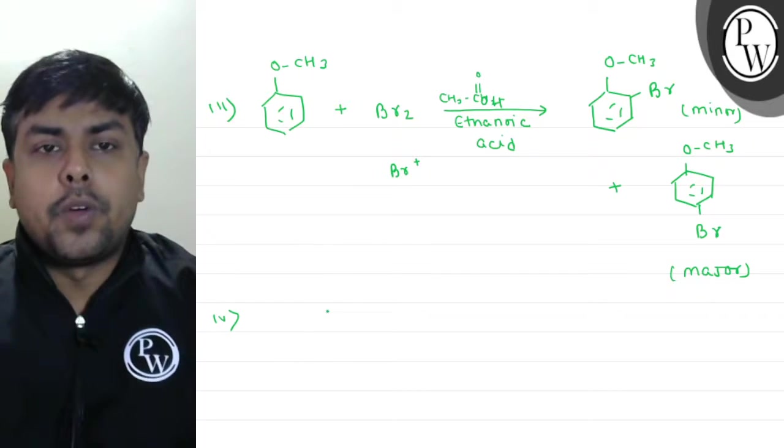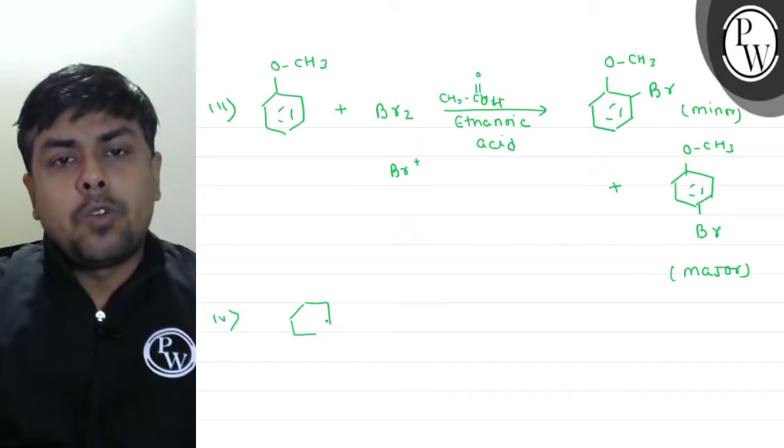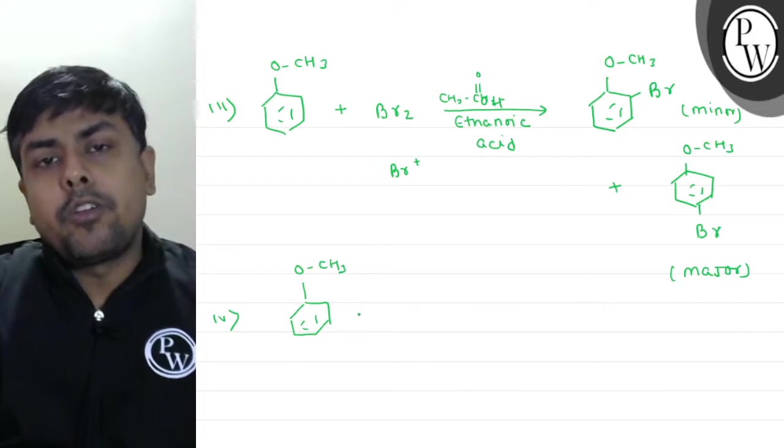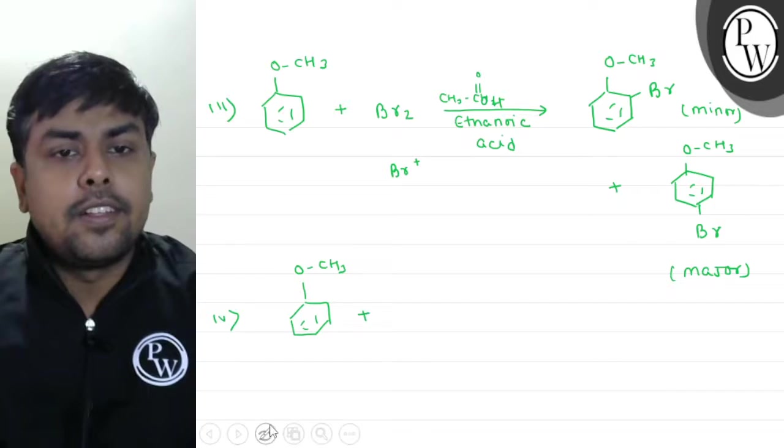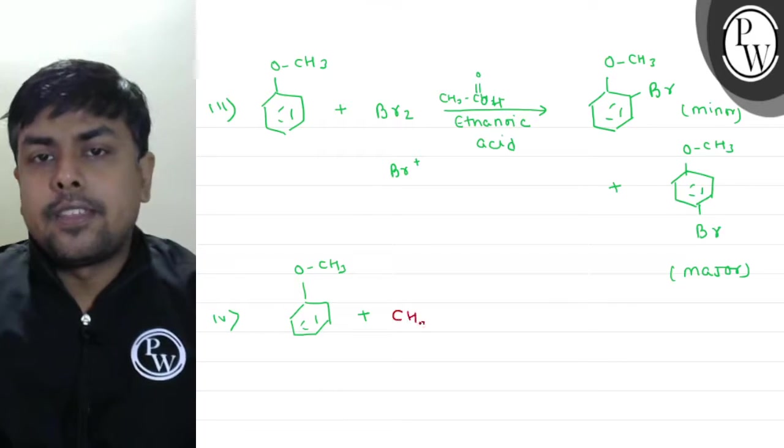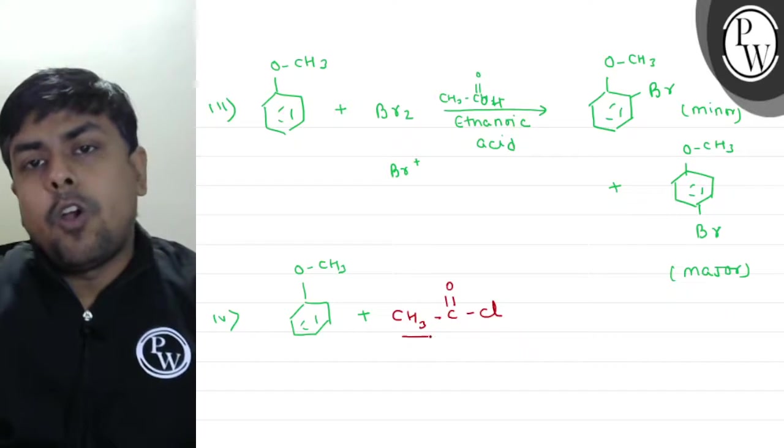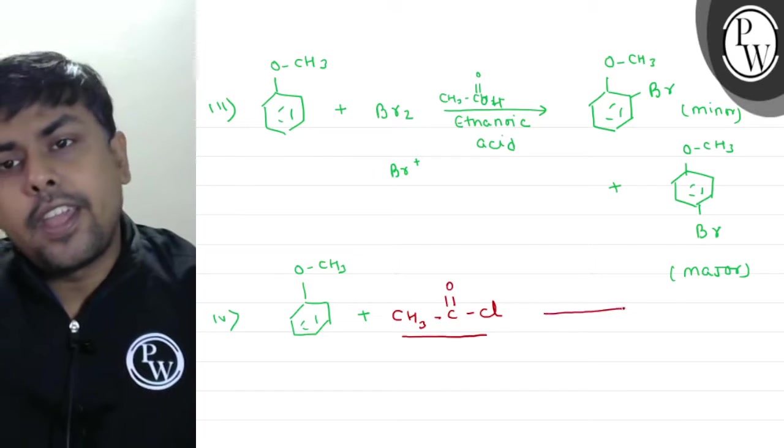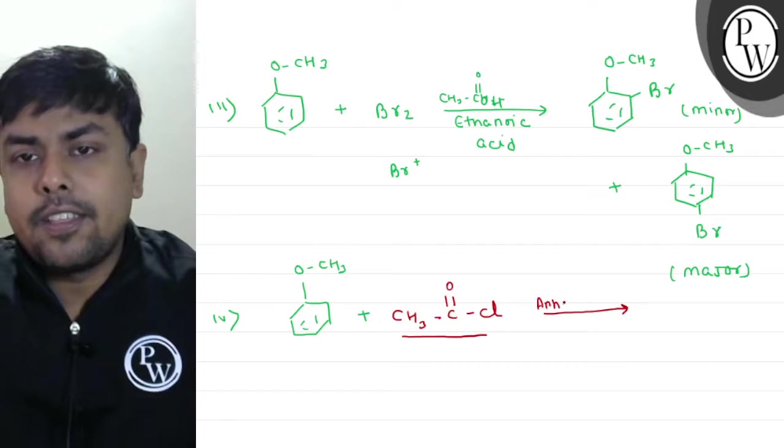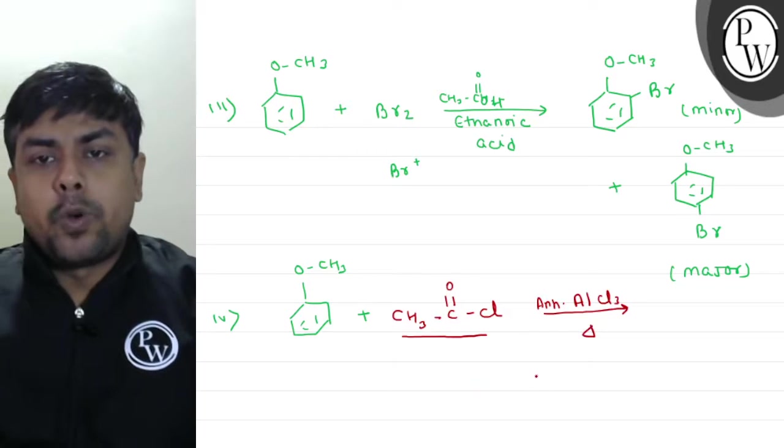Now the fourth one. I am having anisole, O-C-H-3. It is undergoing Friedel-Crafts acylation. For acylation, I can take acylating reagent: C-H-3, C double bond O, Cl, acyl halide. And we will treat it with a Lewis acid, anhydrous AlCl3, and heat it. The product I'll get: